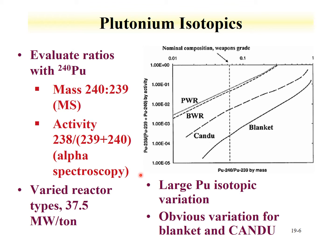What's shown here for varied reactor types at 37.5 megawatts per ton is that you can even evaluate differences between pressurized water reactors and boiling water reactors, although the difference isn't that great—however, it can be observed. Here is the nominal composition of weapons-grade plutonium. If you look at the plutonium-240 to 239 mass, over here would be weapons, and here would be more reactor conditions.